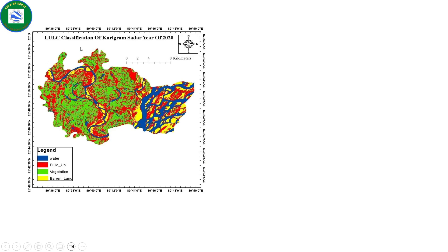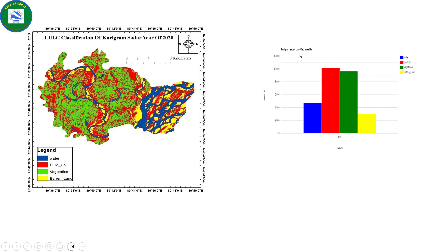Here is an example LULC map for the year 2020 showing one district of Bangladesh. Different colors represent different land cover classes: water body, barren land, vegetation, and other features. This is an example land use land cover classification map showing the visual output we will generate.